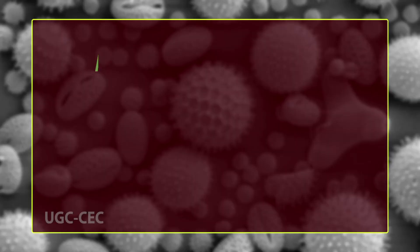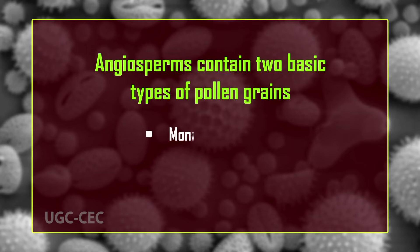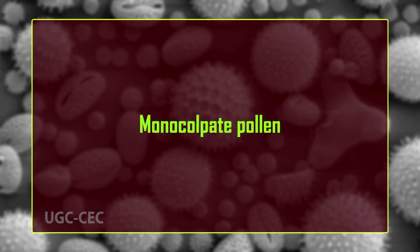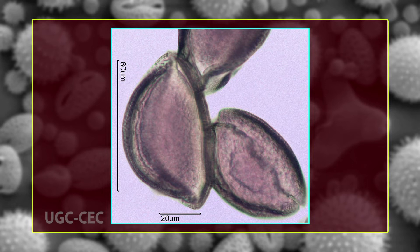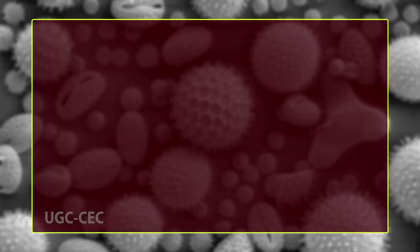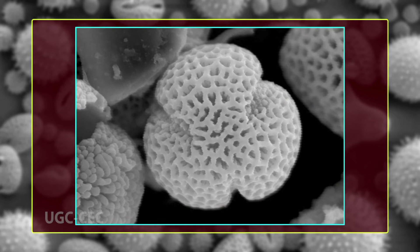Pollen aperture is a specialized region of the pollen wall through which the pollen tube emerges. The exine may be inaperturate, that is without an aperture, or aperturate. Angiosperms contain two basic types of pollen grains: monocolpate and tricolpate. Monocolpate pollen is aperturate pollen with a single slit running at right angles to the equator; such pollen grains are characteristic of primitive dicotyledons, several monocotyledons, pteridosperms, and cycads. Tricolpate pollen grains have three colpi, each with a germinal pore in the middle, and are globose in shape.